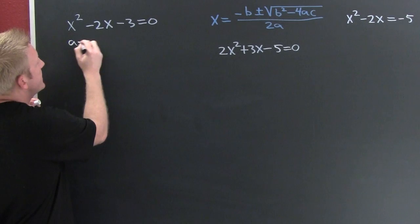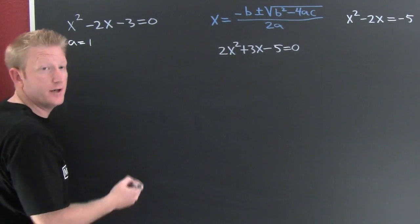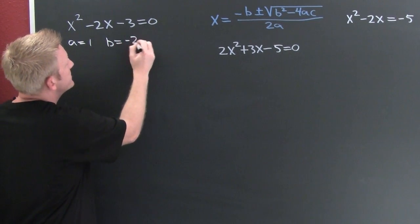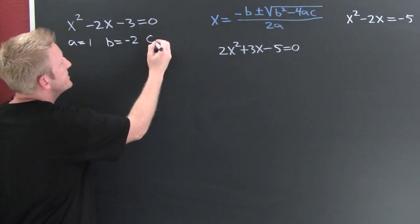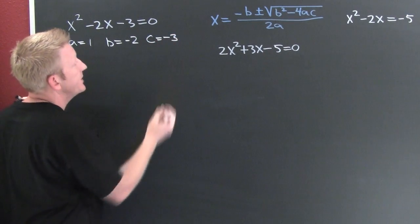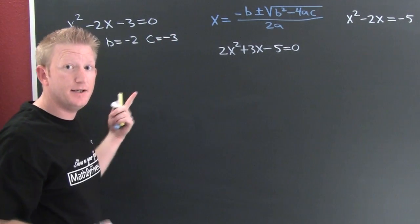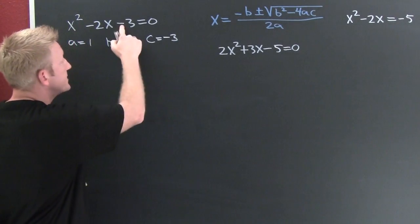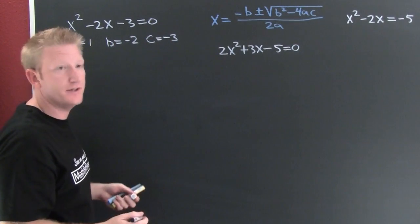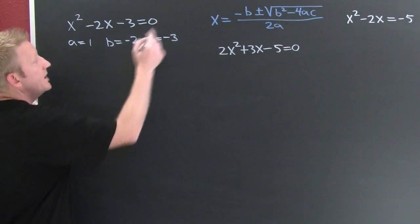Your a is the coefficient on the leading term, here we see a is going to be 1, and your b is minus 2, and your c is minus 3. It's important that the minus sign stick with the coefficients.